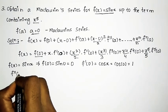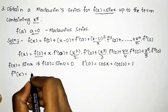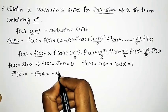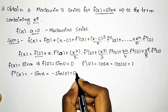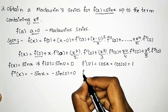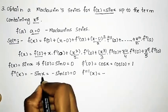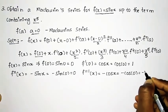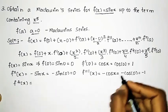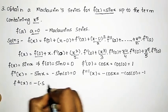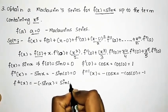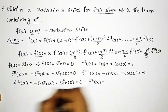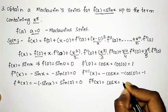For f''(x): differentiating cos x gives minus sin x, so f''(0) = minus sin 0 = 0. Since it is 0, no need to write the minus sign. For f'''(x): differentiating minus sin x gives minus cos x, so f'''(0) = minus cos 0 = minus 1. For f''''(x): differentiating minus cos x gives sin x, so f''''(0) = sin 0... giving the cycle back.